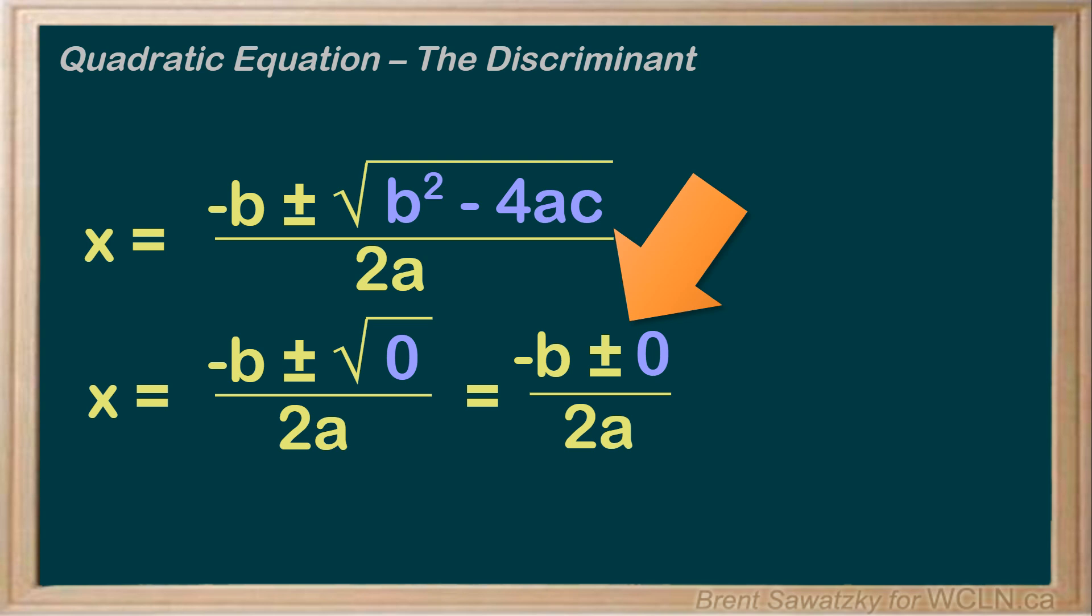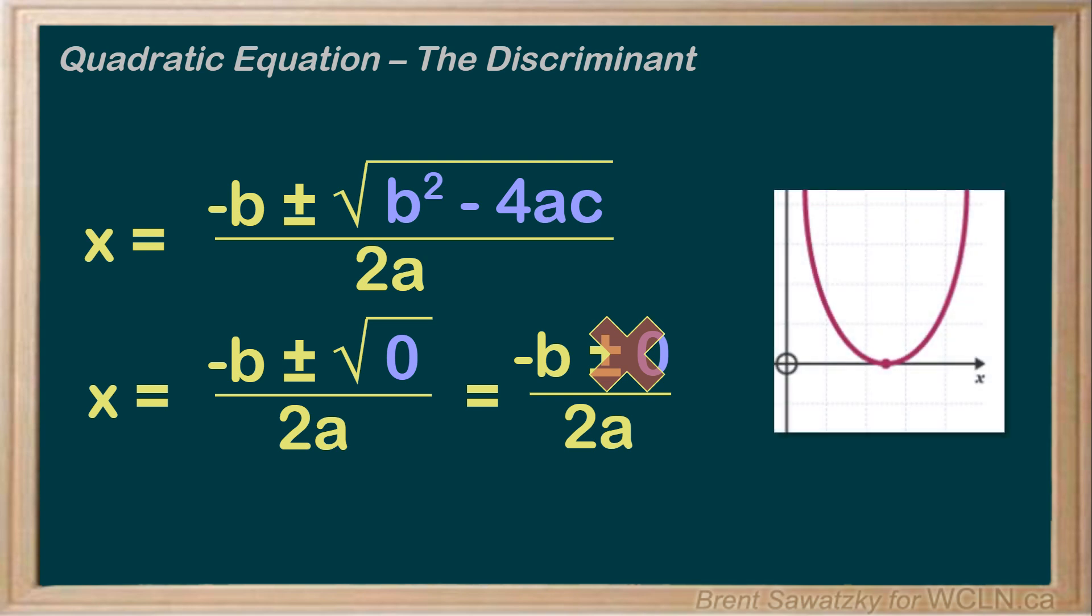So the adding, subtracting here doesn't have any impact on our outcome. Whether we add 0 or subtract 0, our root's always going to be the exact same number. The graph would only touch at a single point. We would describe this as 2 roots that are the same, or we could say it only has 1 root.